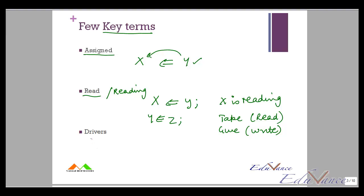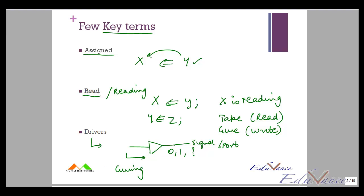And then we have something called a driver. A driver is a signal or port that gives a logic value — as in 0 or 1 or a particular type of value — to a signal or a port. The person giving this value is typically called the driver. I hope these three terms are clear; we will be using them quite regularly, hence I thought I will discuss them before we move on.